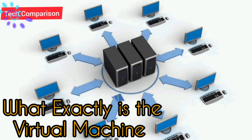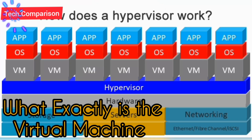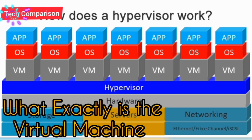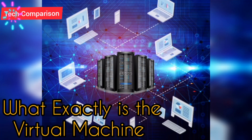Desktop computers normally run other operating systems in their program windows using one operating system. Each virtual machine has its own virtually exclusive hardware including hard drives, CPUs, network interfaces, and memory. The virtual hardware is then mapped to the actual hardware on the physical computer, which decreases cost and maintenance costs by reducing the need for physical hardware systems as well as power and replacement demand.